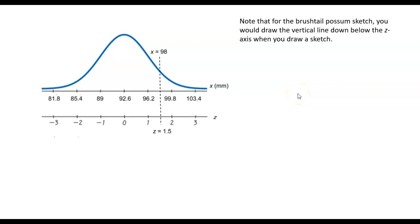So again, I want to jump in and point out a couple of differences of what you would need to do if you were drawing a sketch and performing calculations that the narrator just completed for the possum example for the case of the head length being 98 millimeters.